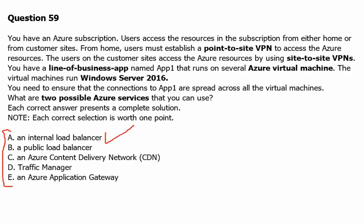Option B is a public load balancer, which is used to serve internet-facing applications. Since our connectivity is available over the VPN for Azure resources, it is not useful in this case, so we will deselect it.